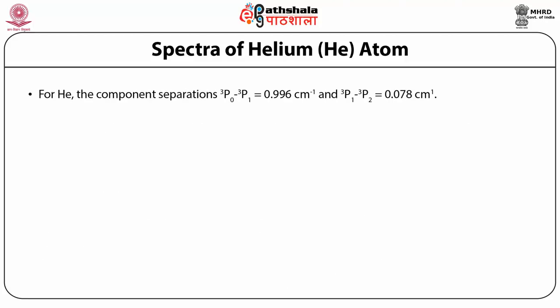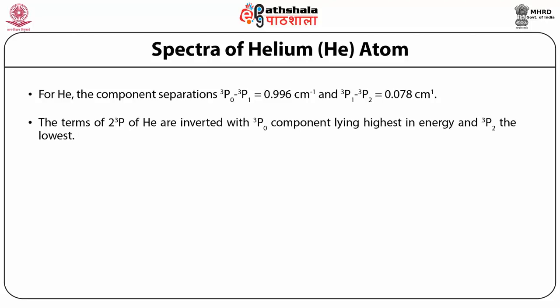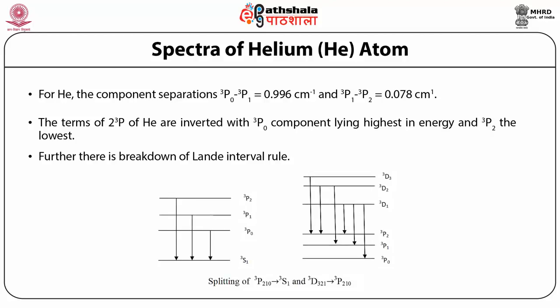For helium, the component separations are: 3P0 minus 3P1 = 0.996 cm⁻¹ and 3P1 minus 3P2 = 0.078 cm⁻¹. The terms of 2³P of helium are inverted, with the 3P0 component lying highest in energy and 3P2 the lowest. There is a breakdown of the Landé interval rule due to spin-spin interaction. The figures represent the 3P210 to 3S1 and 3D321 to 3P210 transitions; the order is inverted in both P and D states for helium.